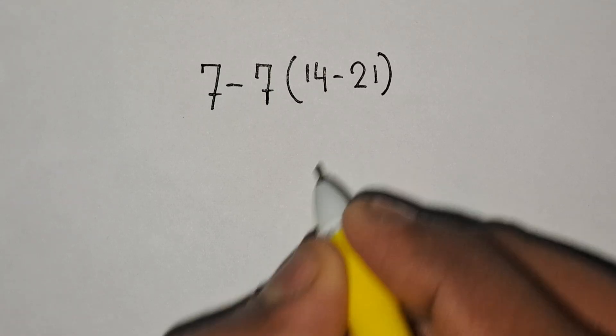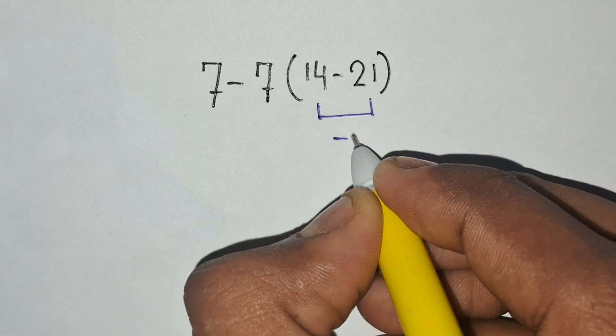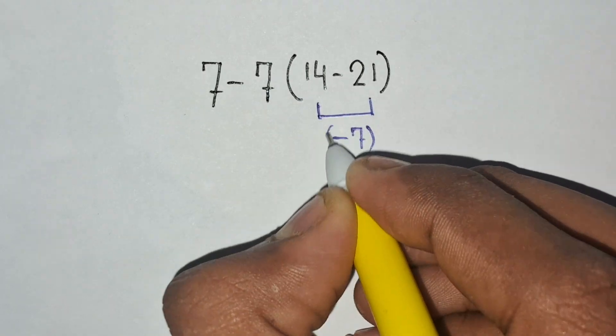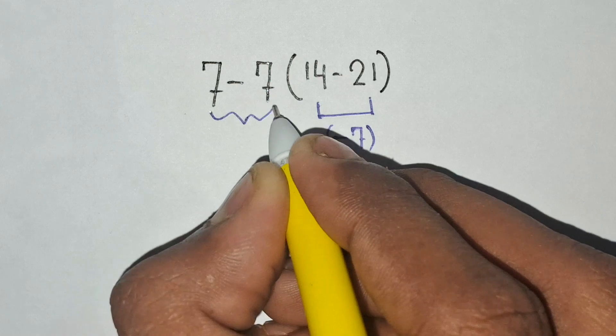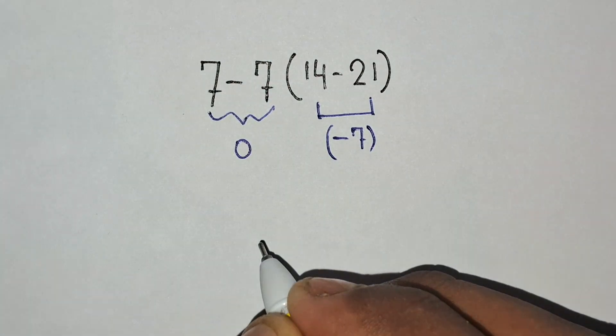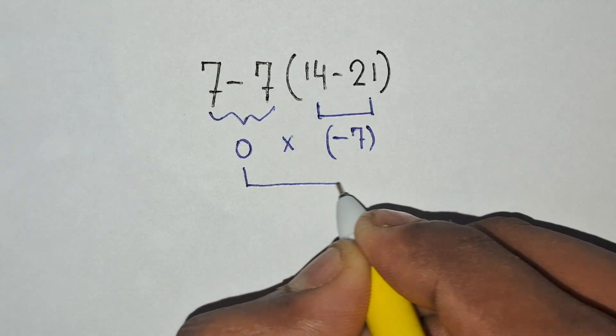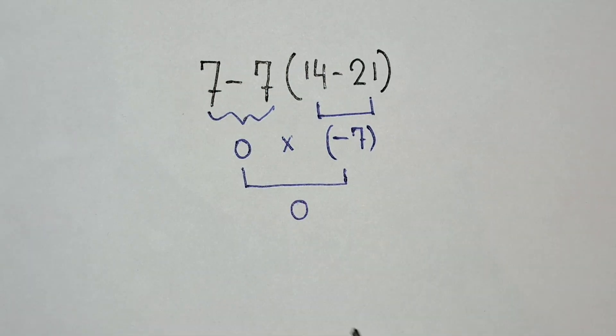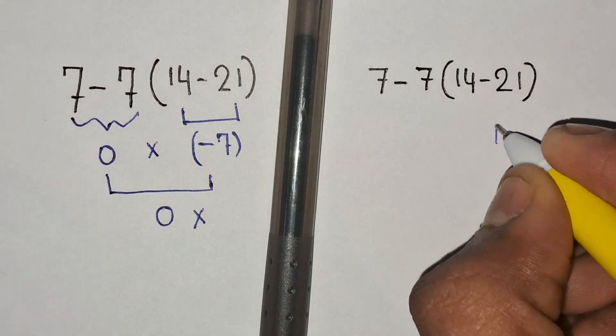14 minus 21 is equals to negative 7, and 7 minus 7 is equals to 0. So 0 times negative 7 is equals to 0. But wait, 0 is not the correct answer for the expression.